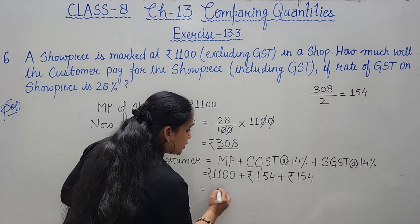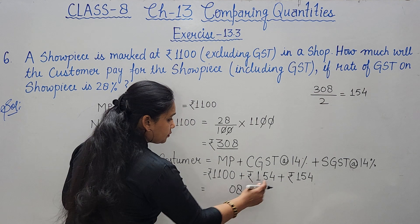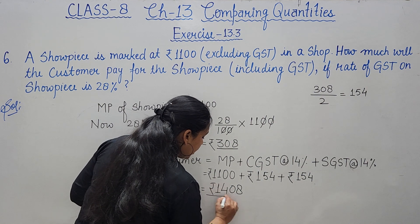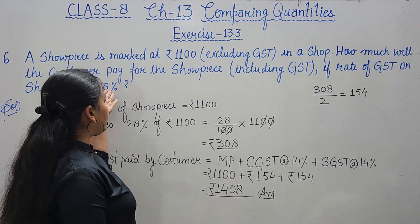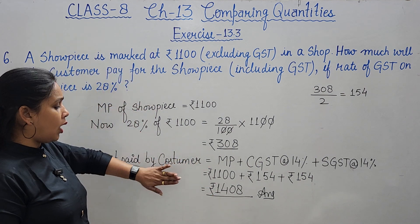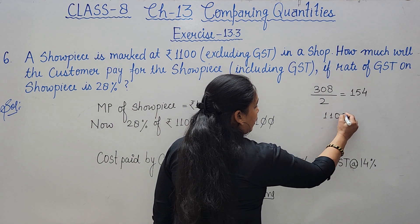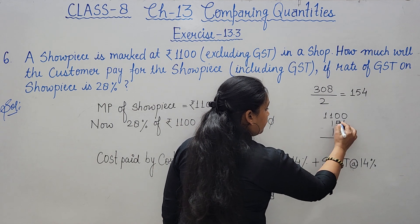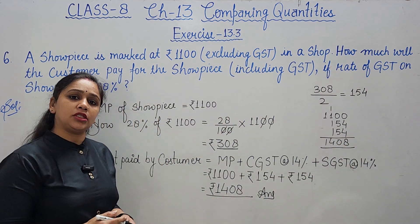Adding them all: 4+4=8, 5+5=10, carry 1... total comes to rupees 1408. That is the total amount the customer pays for the showpiece with 28% GST. You can verify: 1100 + 154 + 154 = 1408. Answer is rupees 1408.